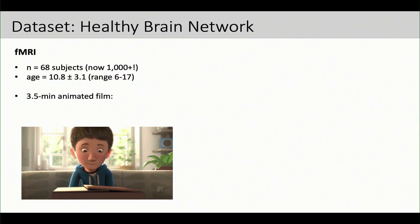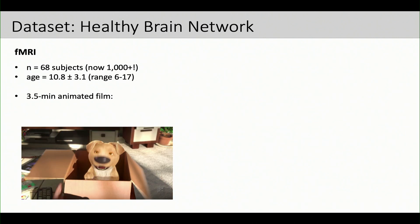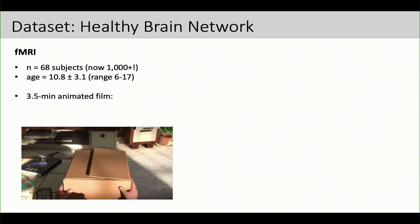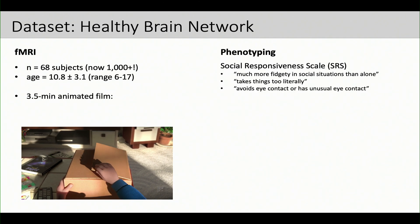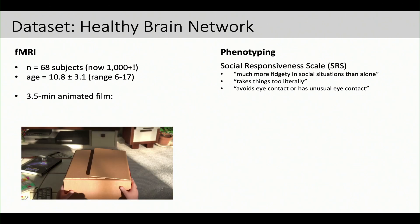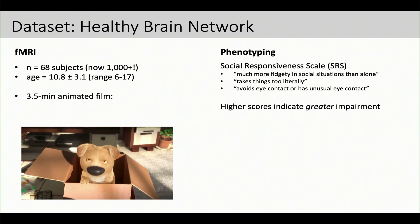And so I'll use the first one to sort of test out these different candidate methods, and this is a data set that comes from the Child Mind Institute in New York called the Healthy Brain Network. They're adding subjects at an incredible rate, so I'll only show you 68 today, but this is a developmental sample where kids watch this three-and-a-half-minute animated film about a boy and a dog. It's cute. It's emotionally evocative in certain places, and the main phenotype that we were interested in this data set was the social responsiveness scale. So this is not necessarily a diagnostic measure, but it does capture sort of a spectrum of variance along sort of autism spectrum. The important thing to know about this measure is that higher scores indicate greater impairments in social function.